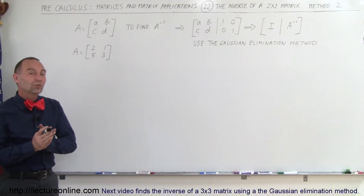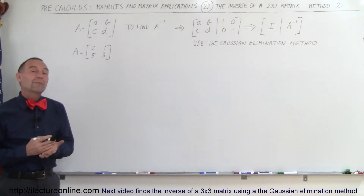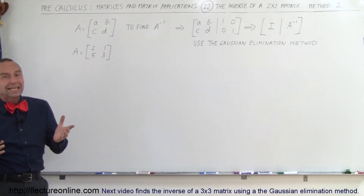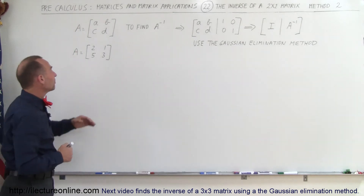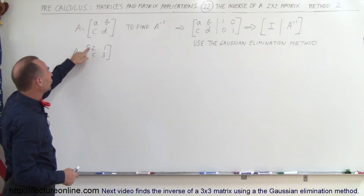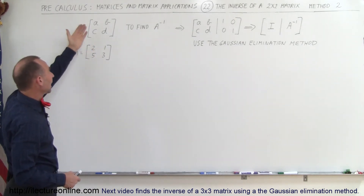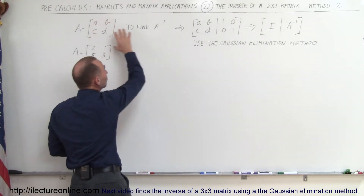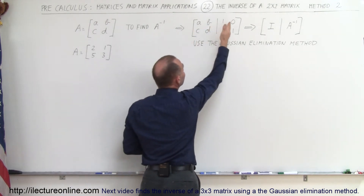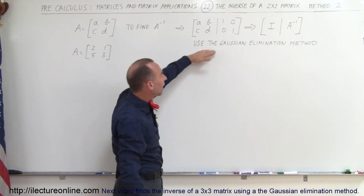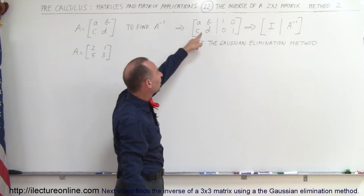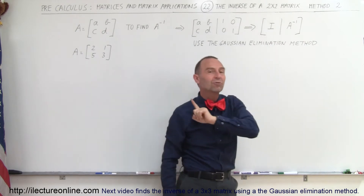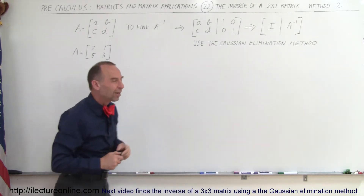Welcome to ElectronLine. Now we're going to solve for the inverse of a matrix using the more general approach, the one that can be used for any n-by-n matrix. Here we have matrix A with elements 2, 1, 5, and 3. To find the inverse, we take the elements of the matrix and augment it with the identity matrix. Then using Gaussian elimination we turn the left side into the identity matrix so that the right side becomes the inverse of the matrix.